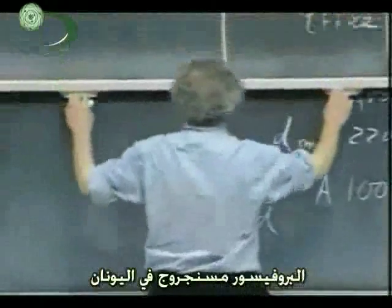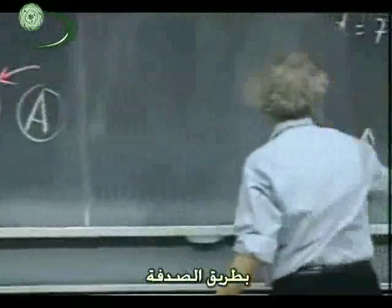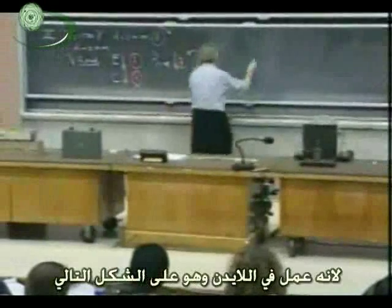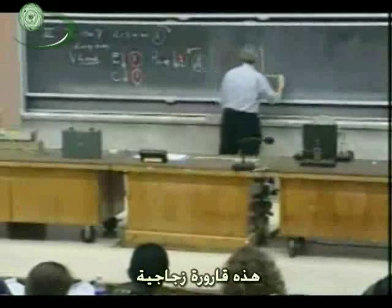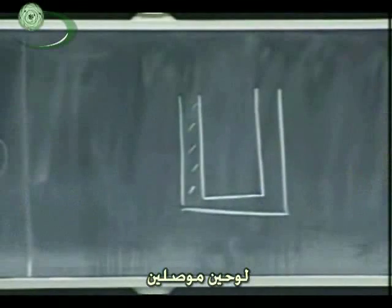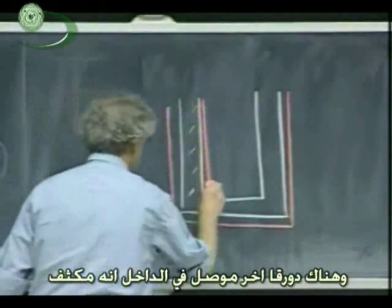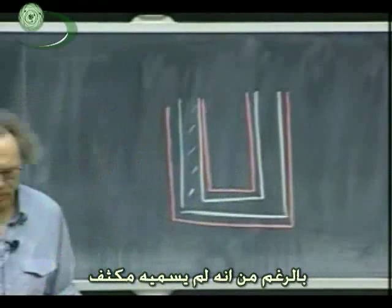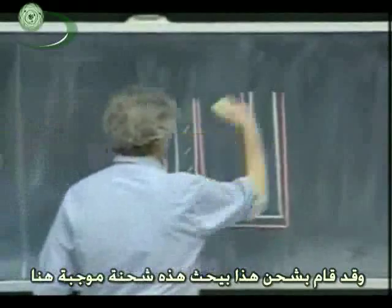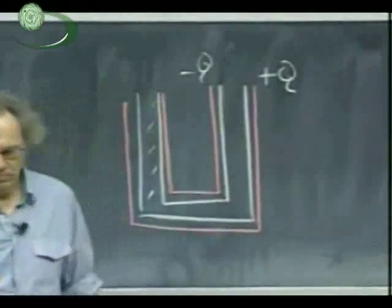Professor Musschenbroek in the Netherlands invented — you can say he invented the capacitor. It was an accidental discovery. He called it a Leiden jar because he worked in Leiden. The Leiden jar is the following: a glass bottle — all glass, an insulator — with two conducting plates, one outside and one inside the insulator. So there's a conducting beaker outside and a conducting beaker inside. That's a capacitor, although he didn't call it that. He charged these up, so you can have plus charge on one side and minus Q on the inside.